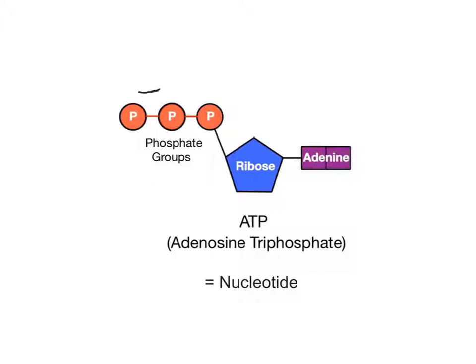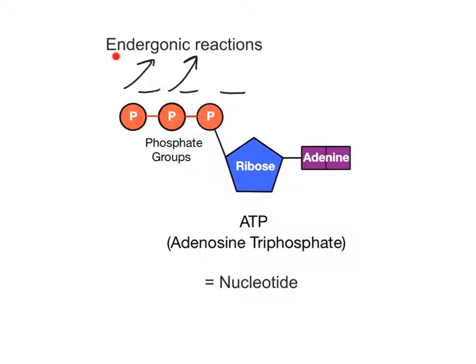The phosphate groups each carry a negative charge and are attached to each other by two phosphate bonds, a type of covalent bond shown in red in the diagram. Because they all have negative charges, the phosphate groups repel each other, making ATP a fairly unstable molecule. These phosphate bonds are important because they're used to transfer energy that powers the various endergonic reactions that take place in the cell. Remember that endergonic reactions require an overall input of chemical energy in order to occur.